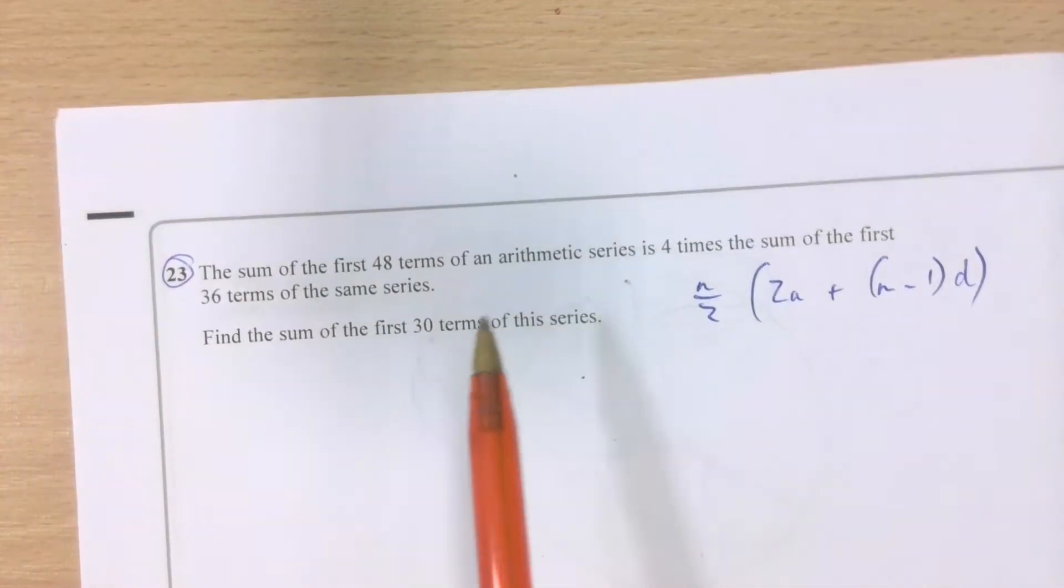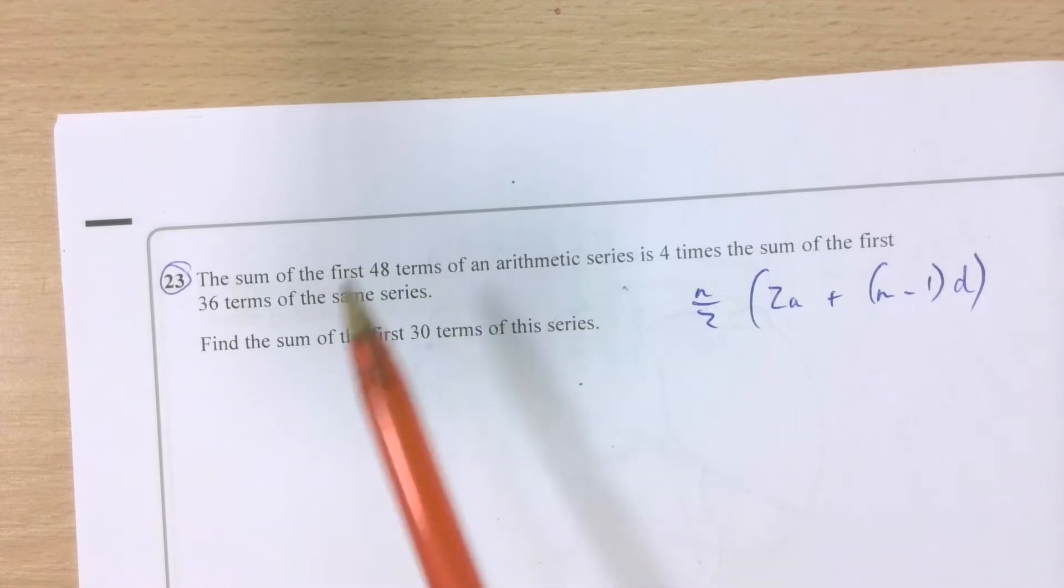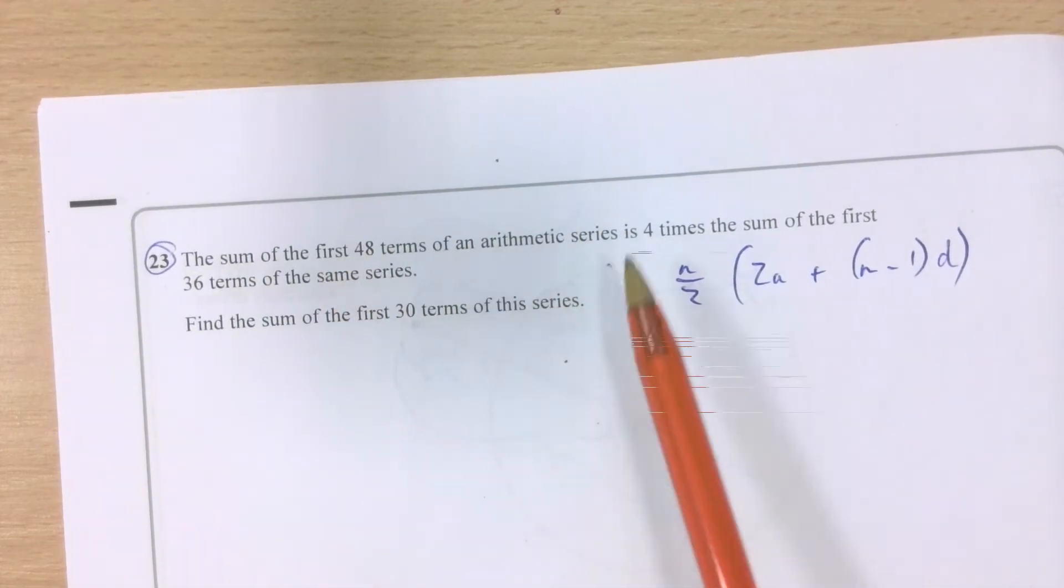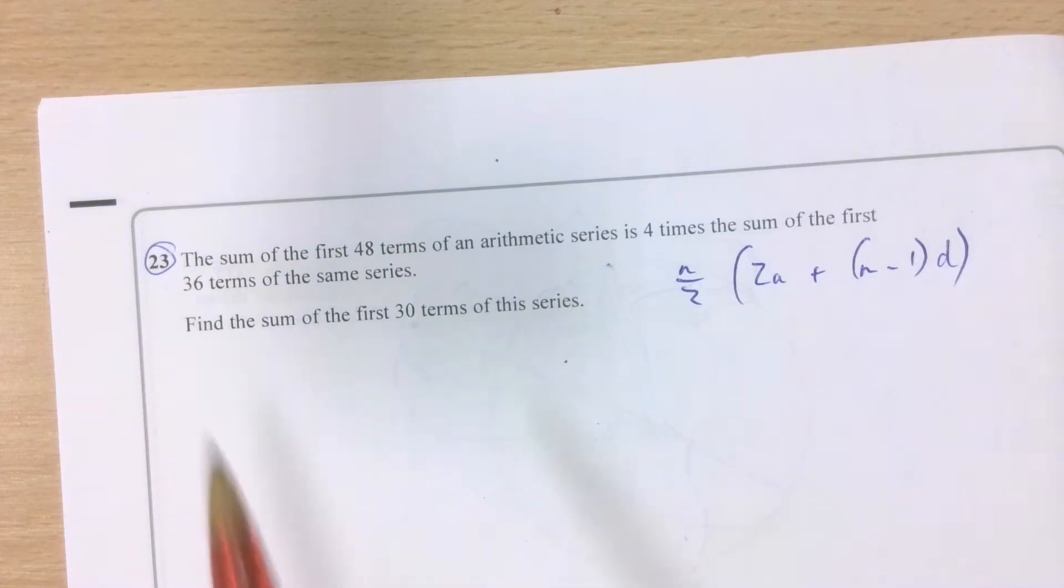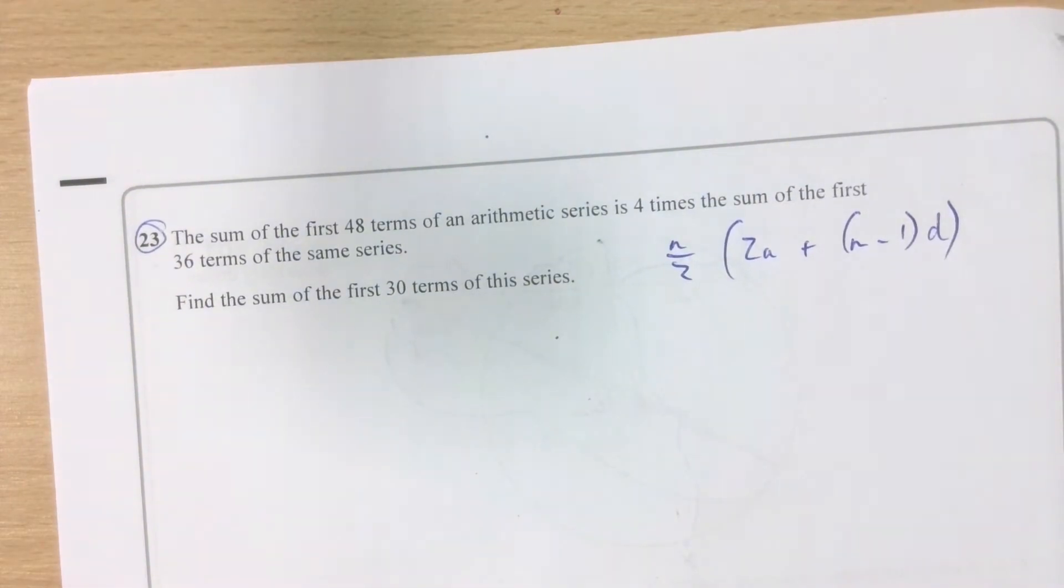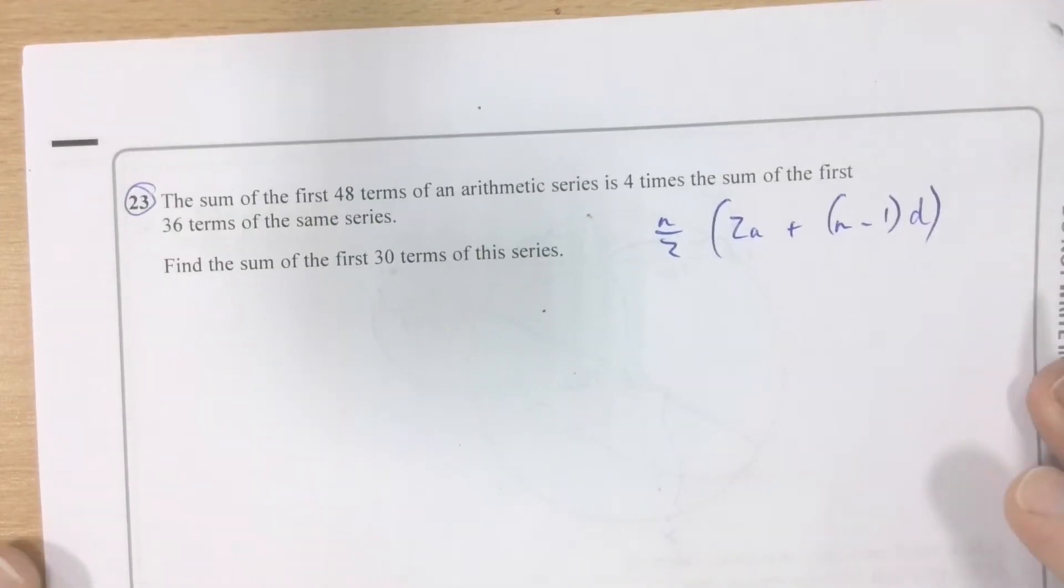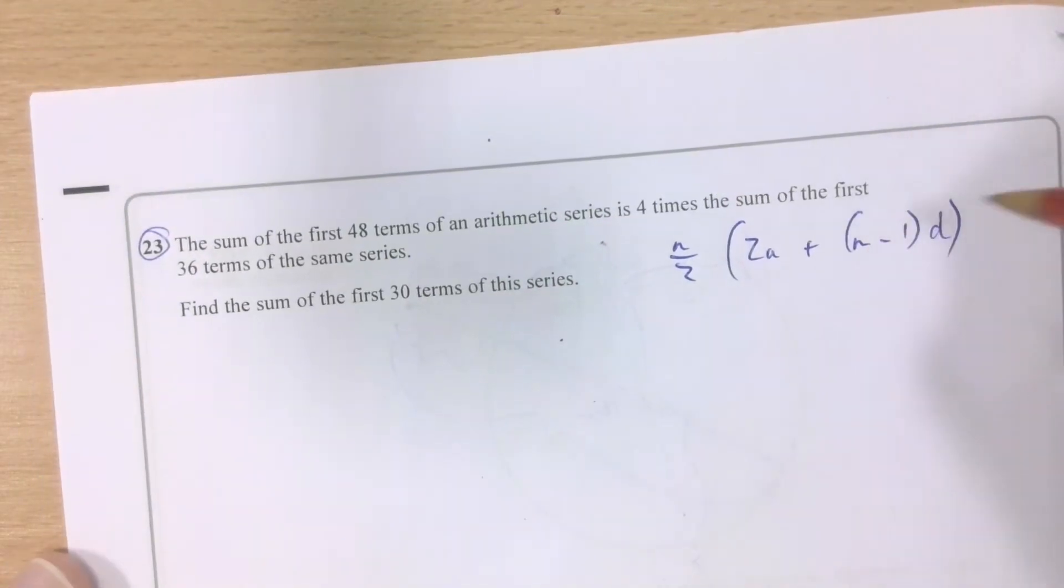Now, at the moment, all we know are the numbers of terms in the series, and the fact that, obviously, the first 48 is equal to 4 times the sum of the first 36, which means we can form an equation. We can actually form an equality between these two statements. So let's do that.